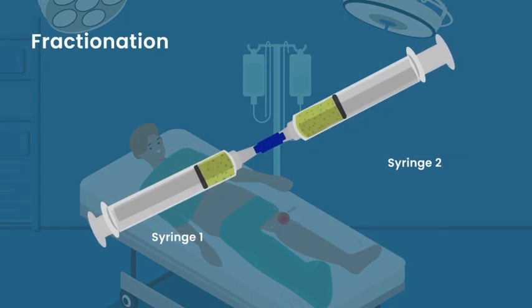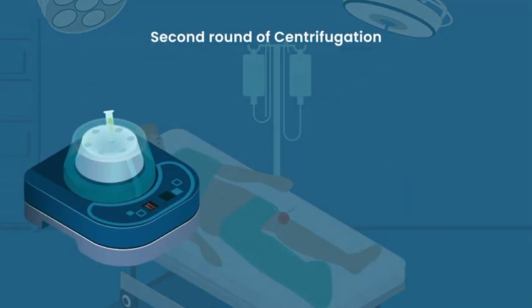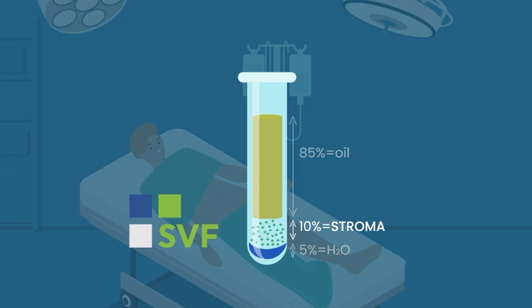By fractionation, these fragile fat cells are now ruptured, while the subcutaneous repair cells remain intact. A second round of centrifugation allows for easy separation of oily, ruptured fat cells and the untouched fraction of repair cells, or so-called stroma.